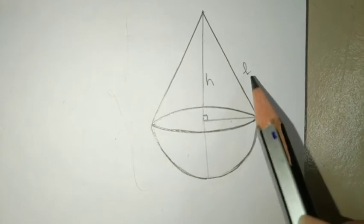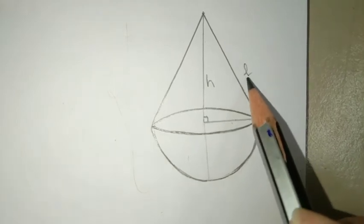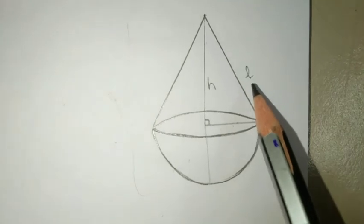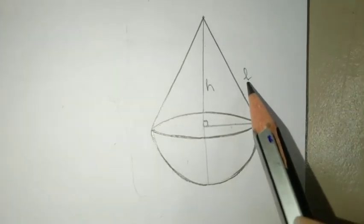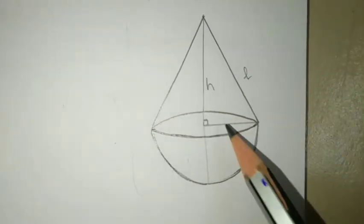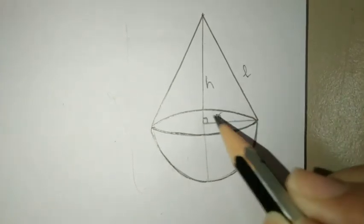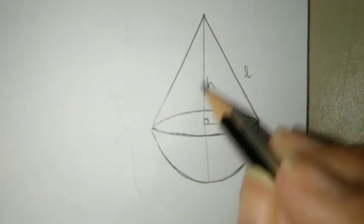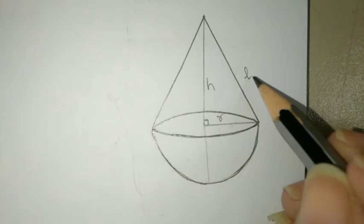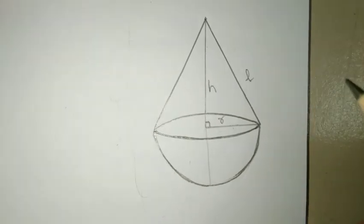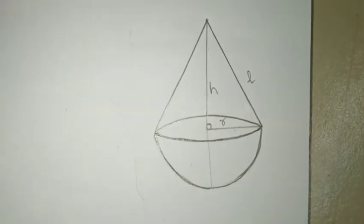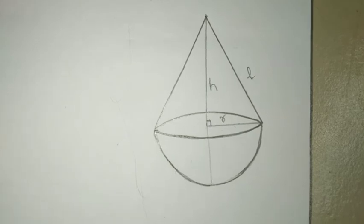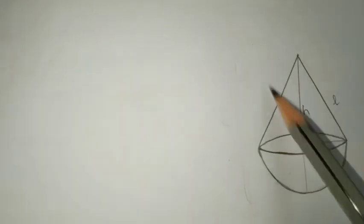In this question, total surface area is needed. Whenever we have to find total surface area of two combined objects, like I've told you before, you will find the curved surface area and add both of the curved surface areas, okay? Now, curved surface area of the cone requires slant height, l.